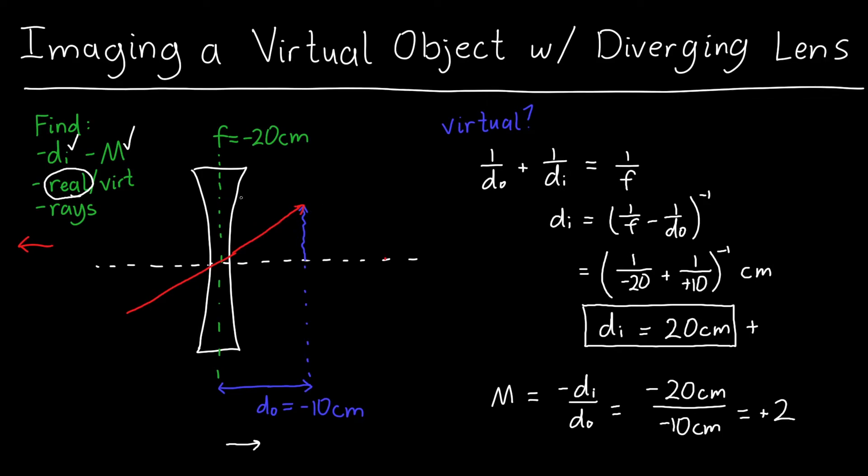But where should we draw our second ray? Well the second ray is, all a virtual object is, is it's where an image would have been formed if we didn't have this lens here. So if we didn't have this lens here, then this ray that I send straight through the diverging lens would just pass right on through, and the two rays would converge here, and I would have an object.